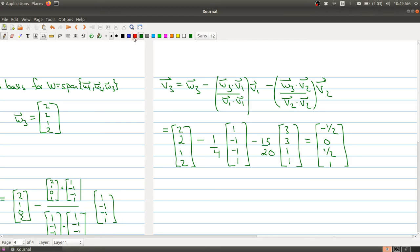And if you prefer, you can rescale, so v3 looks like the vector negative 1, 0, 1, and 2.